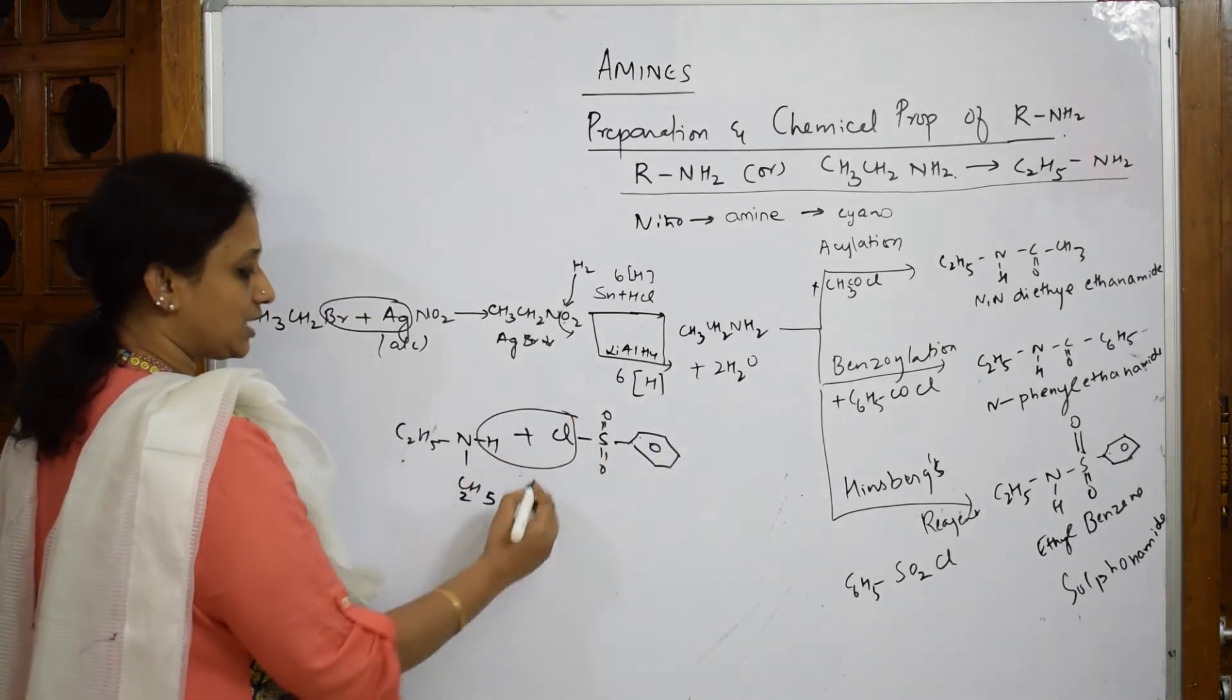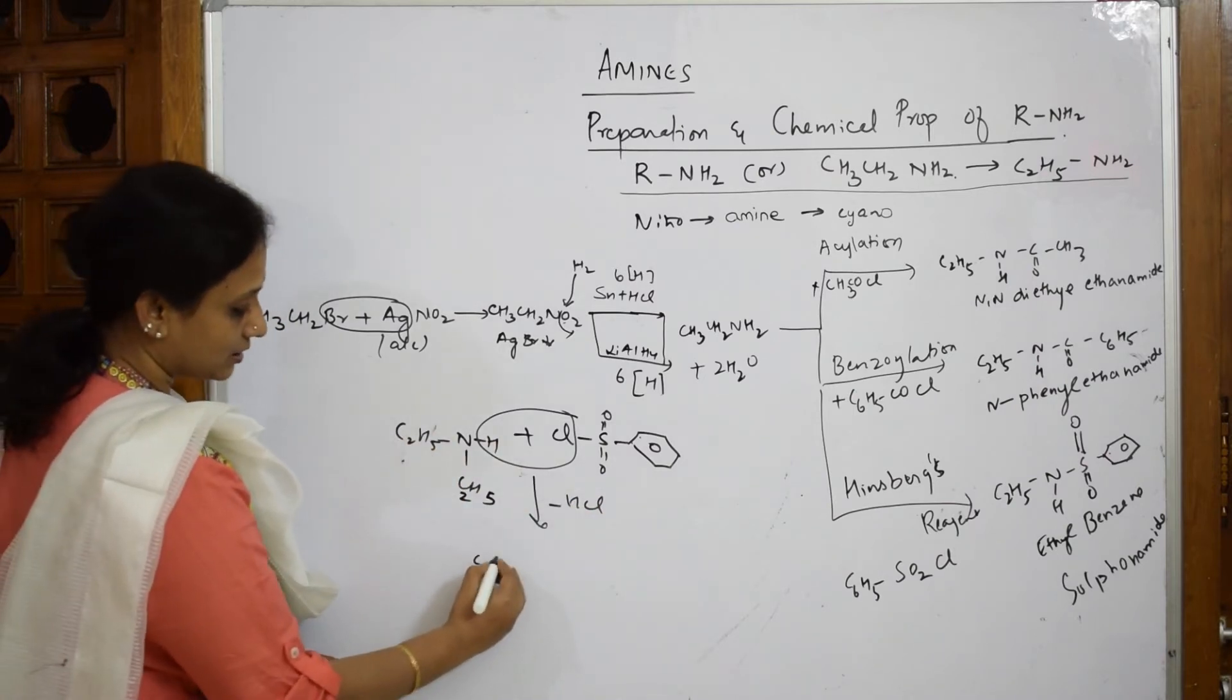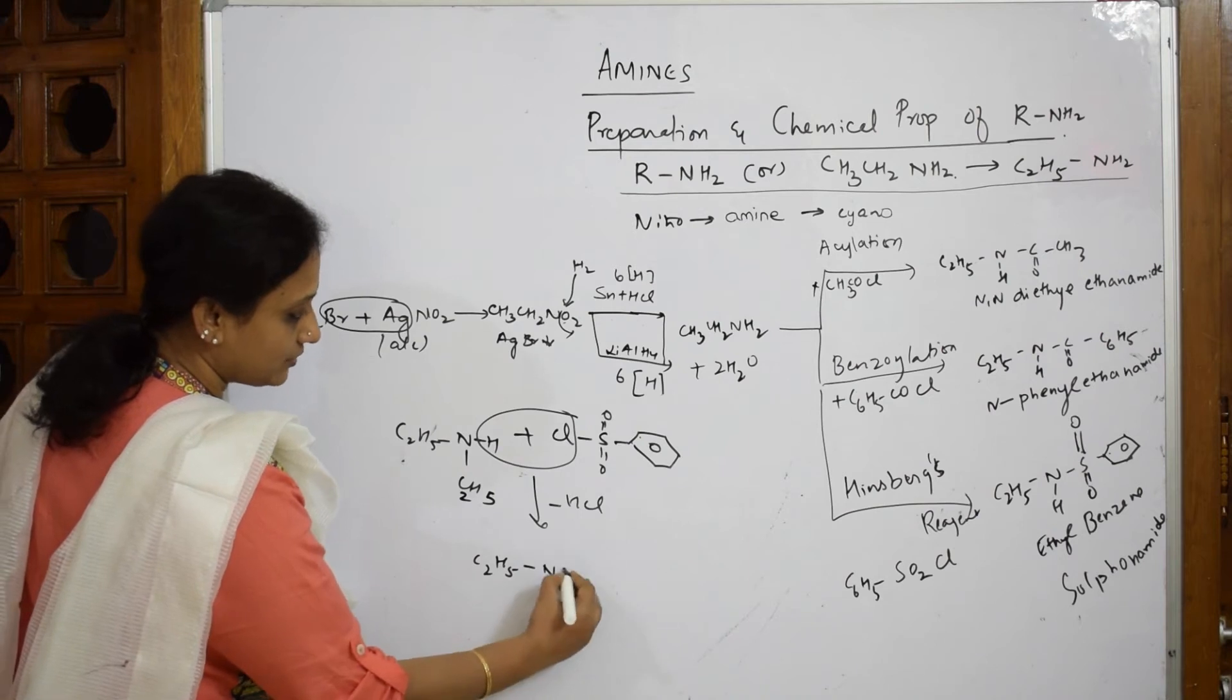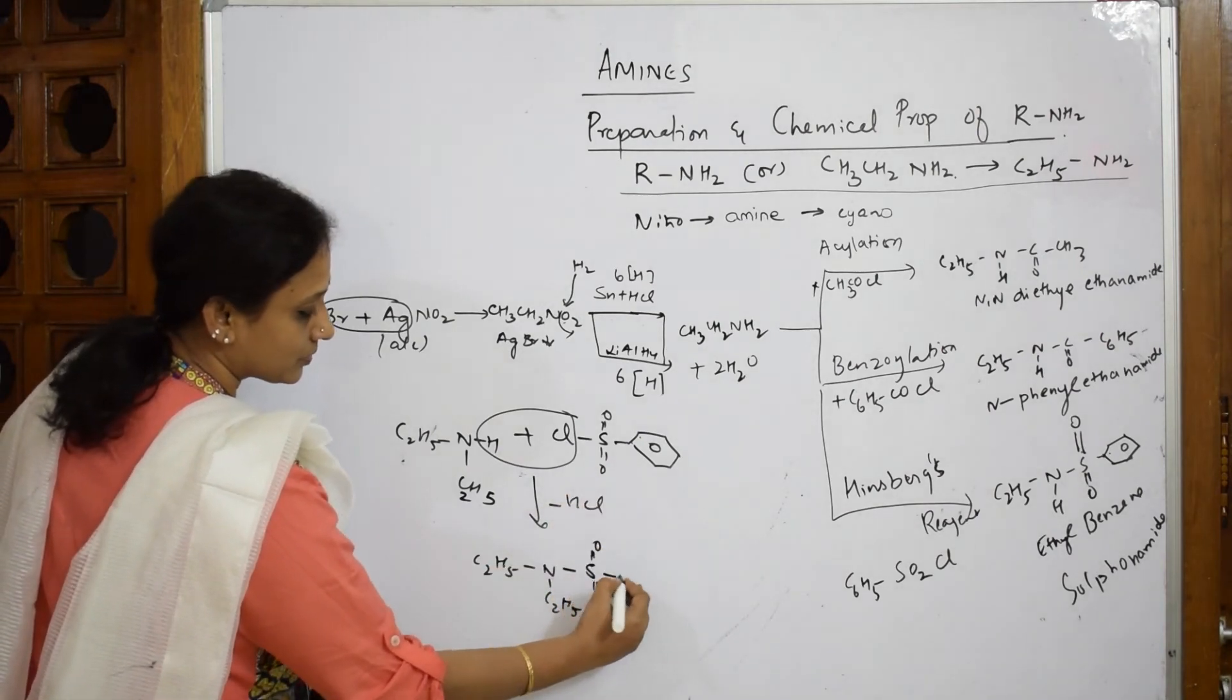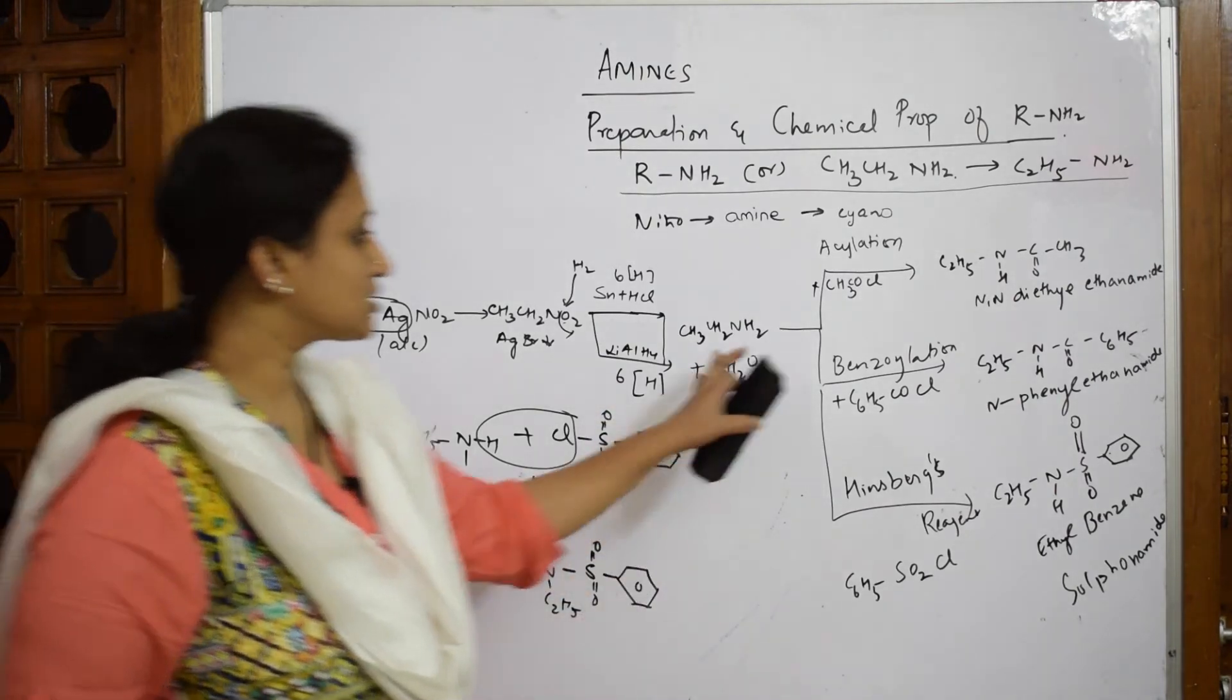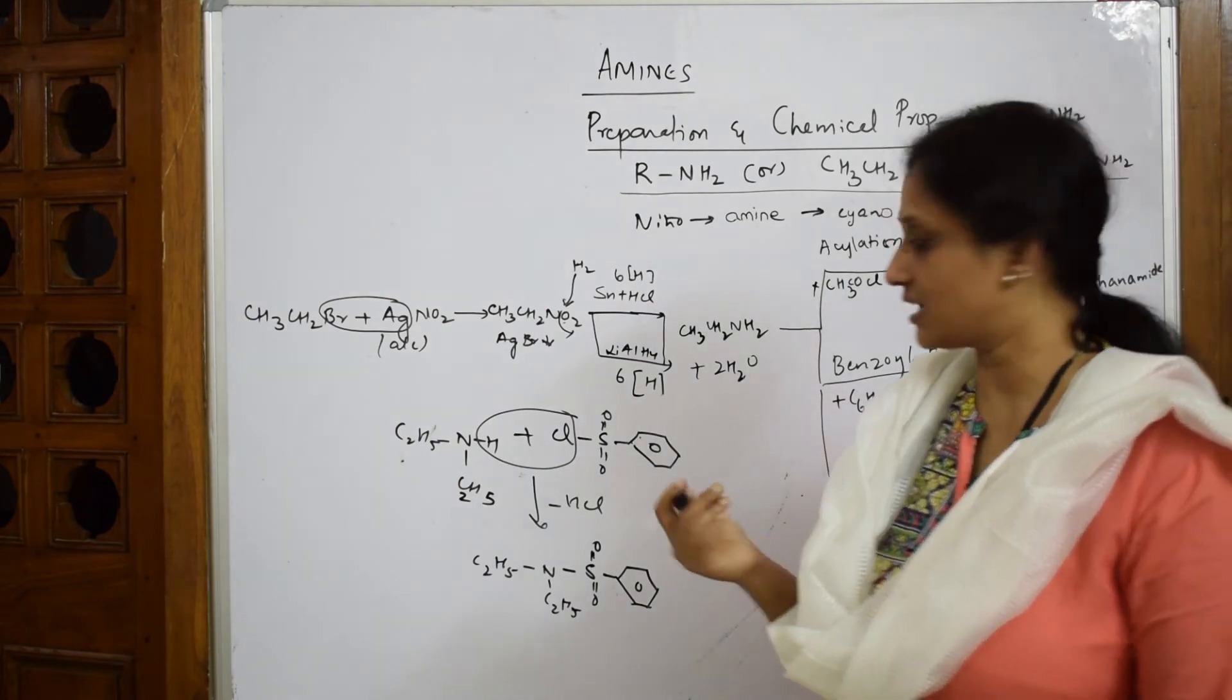Again, take out HCl and join C2H5 and C2H5, SO2, and benzene ring. This is one more modification - instead of primary amine, I took secondary amine. Now tertiary amine, can I take? I can't because there's no replaceable hydrogen atoms.